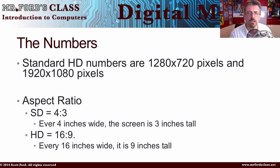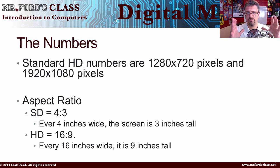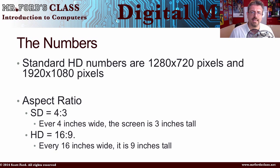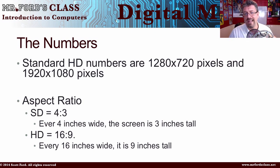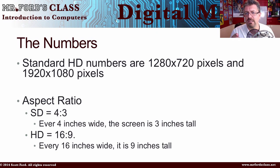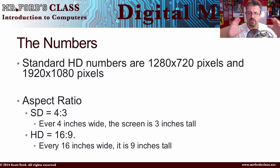Then we have aspect ratio. Before we had HD widescreen televisions, if you wanted to watch a VHS you'd have a boxy feel on your video, or you could buy widescreen which had black bars on the top and bottom. Standard definition is 4 by 3 — for every 4 inches wide it has to be 3 inches tall. HD is widescreen: 16 by 9, meaning for every 16 inches wide you're 9 inches tall. Early videos in this series had black bars on the side because I wasn't shooting wide enough for HD.